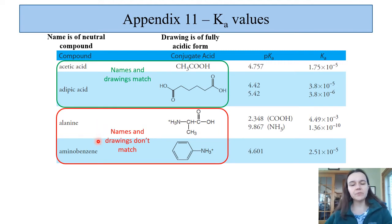However, there are other examples where the names and drawings do not match. Alanine is the name of the neutral compound, but what you notice here is that we have an extra positive charge on the amine group, and there are multiple pKas. The acidic one is for the carboxylic acid COOH proton, and the more basic pKa is for that loss of the third proton from the amine.